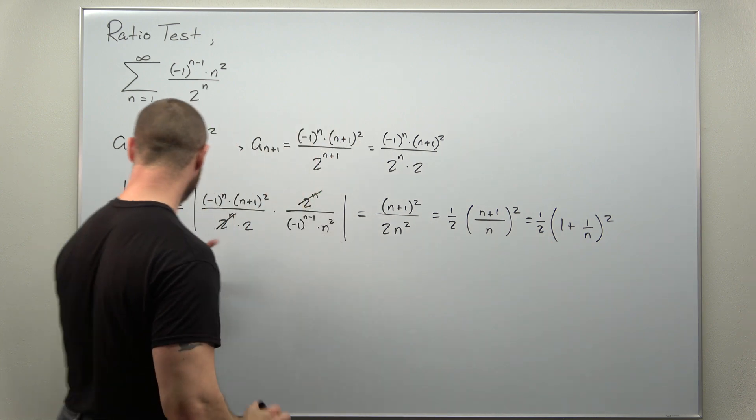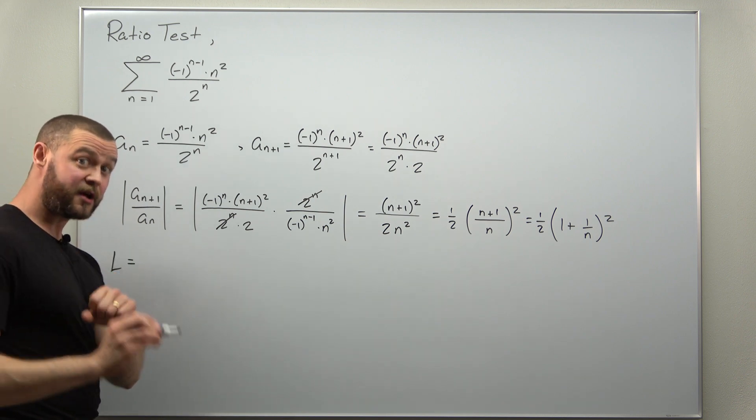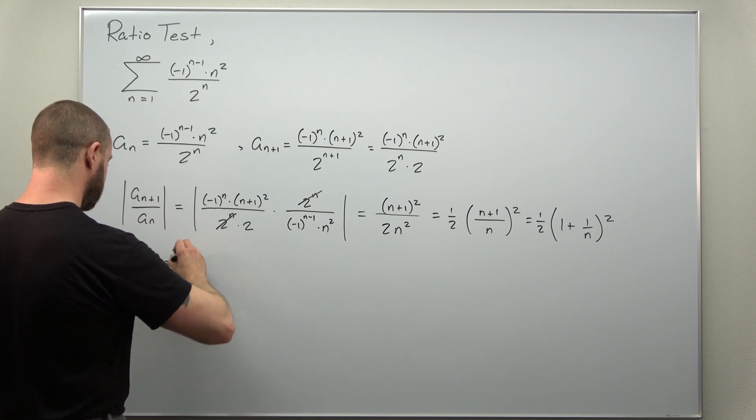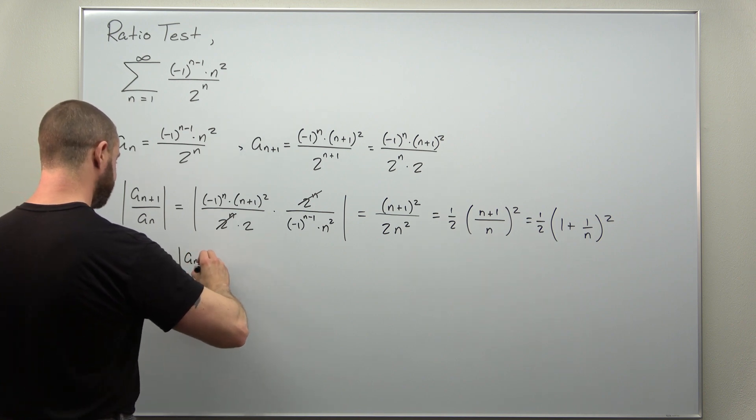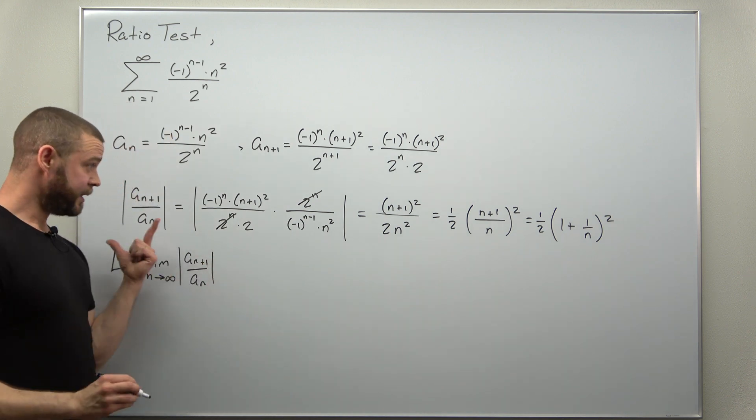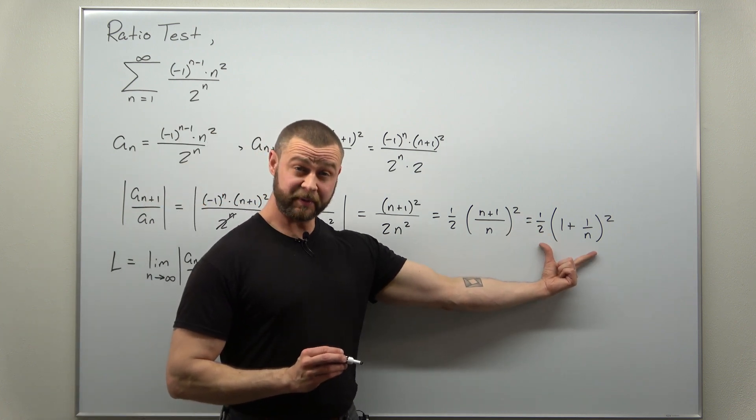All right, now we're ready to take the limit of this. So we're going to calculate L with the ratio test, which is the limit as n goes to infinity of the absolute value of a_{n+1} divided by a_n. We just calculated that. Let's go ahead and use this simplified end result.